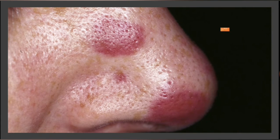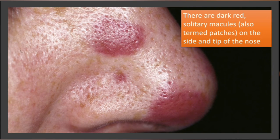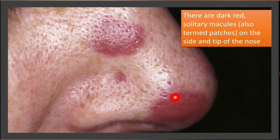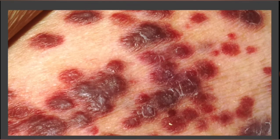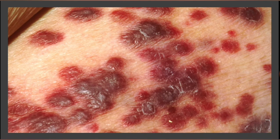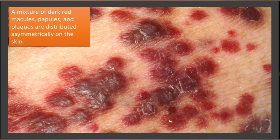Here you can see dark red solitary macules, also called patches, here and here. You can see this one on the tip of the nose. These lesions represent the initial lesions. The second image is on the skin.